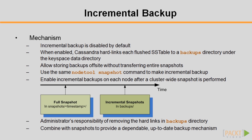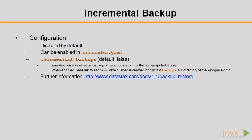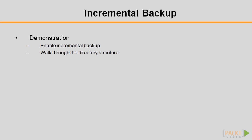When combined with snapshots, it provides a dependable, up-to-date backup mechanism. To enable incremental backup, we need to set the parameter incremental_backups in cassandra.yaml to true. I'll show you how to do it in the following demonstration. In this demonstration, I'll enable and make two incremental backups and walk you through the directory structure.